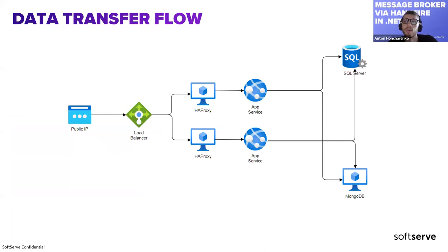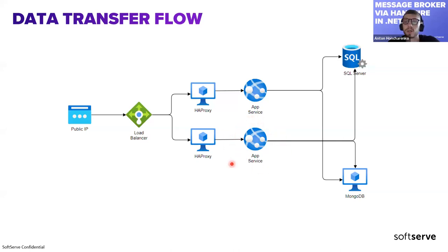Let's look at our data transfer flow. Everything starts with the public API which the client requests, then it goes to a load balancer. We have multiple proxy servers, each with access to one of our instances of the main application — a pure app service in Azure. Each has access to our single SQL Server and MongoDB. This is a single monolith architecture, which is why a microservice approach wasn't allowed, as our client had no experience maintaining such things in Azure.